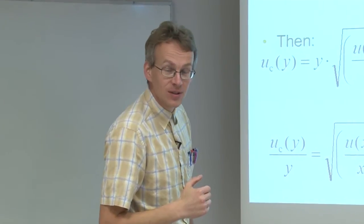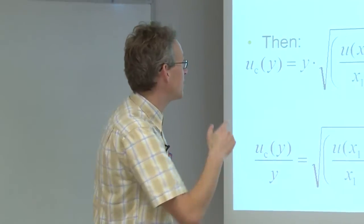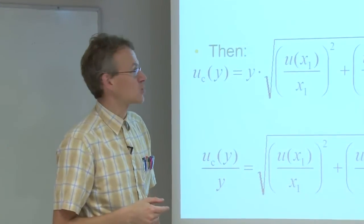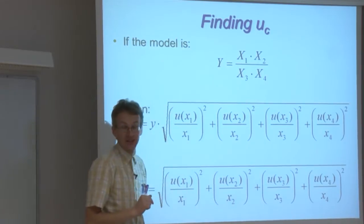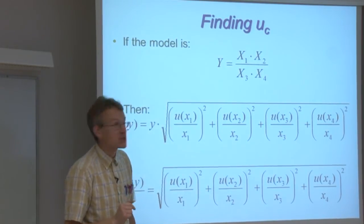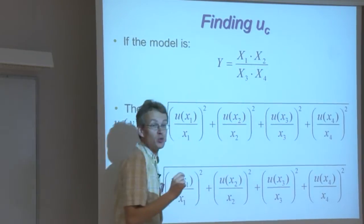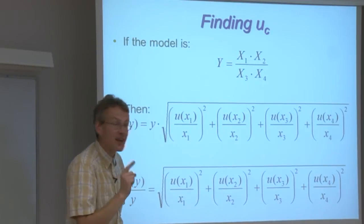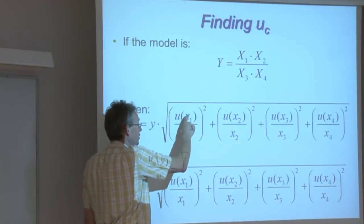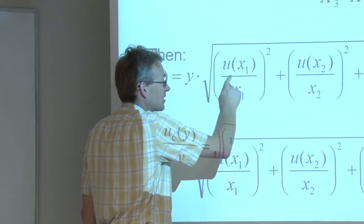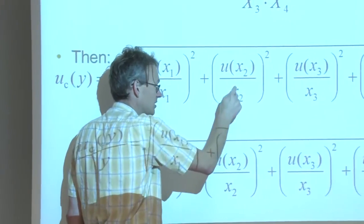the combined standard uncertainty of the output quantity is calculated in a slightly more complex way. Now we do not add combined standard uncertainties of the input quantity, because very often those input quantities in fact have different units, so we are not allowed to add them. Instead, we add their relative standard uncertainties. So, in all these cases the standard uncertainty of the respective input quantity is divided by its value. Standard uncertainty divided by value, etc.